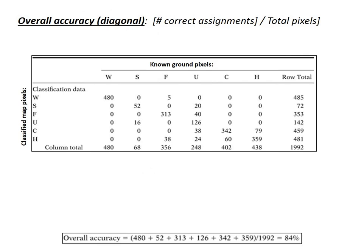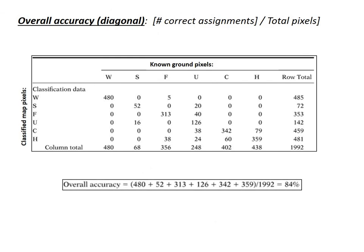Finally, you can look at the overall accuracy — essentially how many assignments were correct out of the total pixels. We look down the diagonals and add up all the correctly classified pixels: 480 for water, 52 for sand, 313 for forest, and so on. We sum all those up and divide by the total number of pixels, 1992. The overall accuracy is 84% — not bad. Think you can beat that on your map? We'll find out.